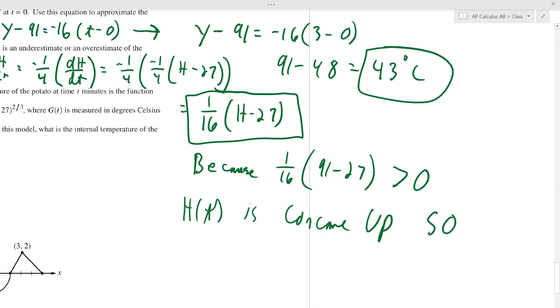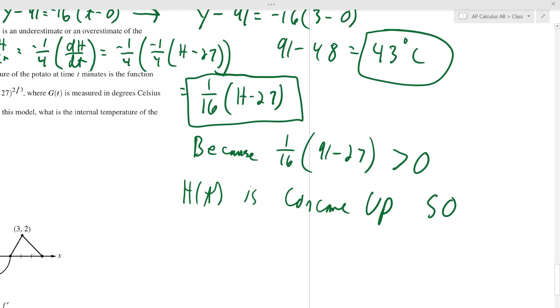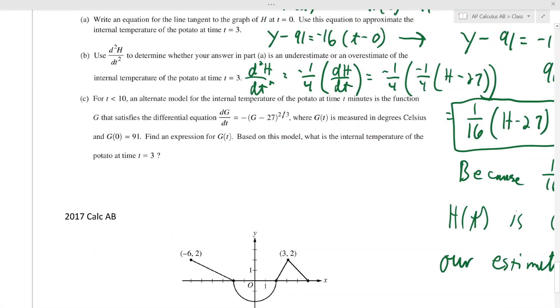And you don't need to explain this. As long as you say h of t is concave up, you can say so my estimate or our estimate. Now, because it's concave up, concave up we found a tangent line to it. The tangent line is going to be below the curve. So our estimate is an under approximation.